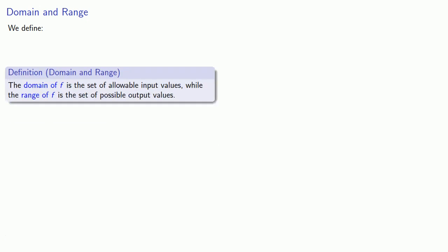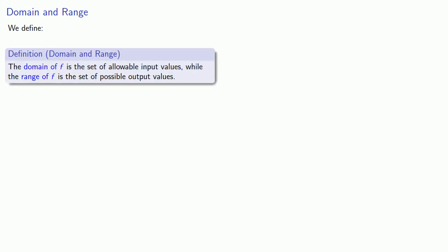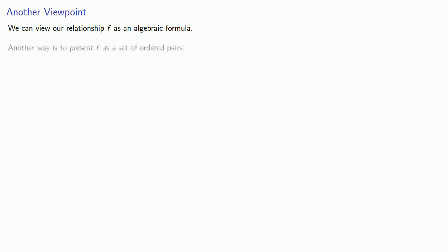Given some relationship between variables, we define the following. The domain of f, our relationship, is the set of allowable input values, while the range of f is the set of possible output values. Now typically we can view our relationship f as an algebraic formula, but another way to represent f is as a set of ordered pairs, so f might be the collection of ordered pairs x1, y1, x2, y2, and so on.